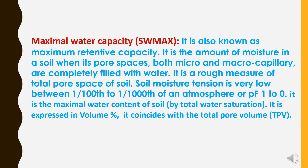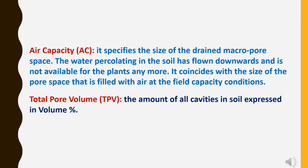Maximum water capacity, also known as maximum detentive capacity, is the amount of moisture in a soil when its pore spaces — both micro and macro capillary — are completely filled with water. It is a rough measure of total pore space of soil; soil moisture tension is very low, between 1/100th to 1/1000th of an atmosphere (pF 1 to 0). It is expressed in volume percent and coincides with total pore volume. Air capacity specifies the size of the drained macro pore space — water percolating downward is no longer available to plants — and coincides with the pore space filled with air at field capacity conditions. Total pore volume is the amount of all cavities in soil, expressed in volume percent.